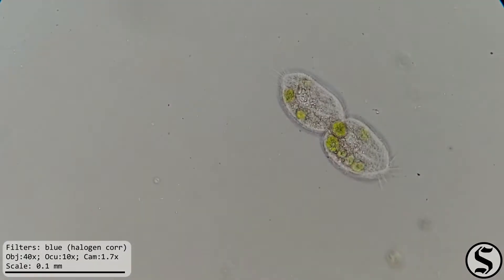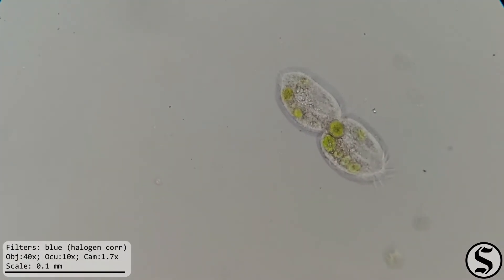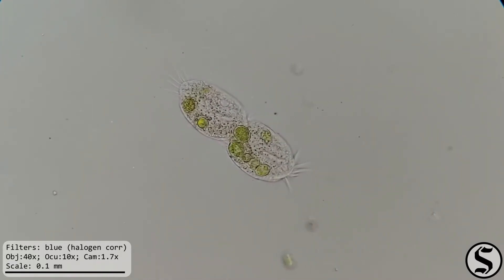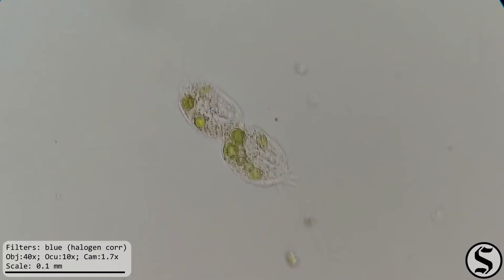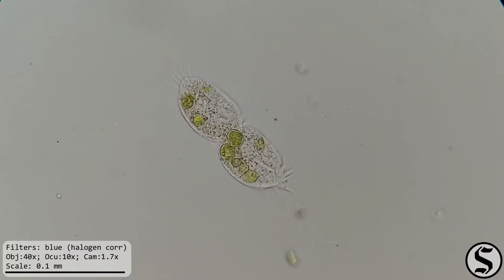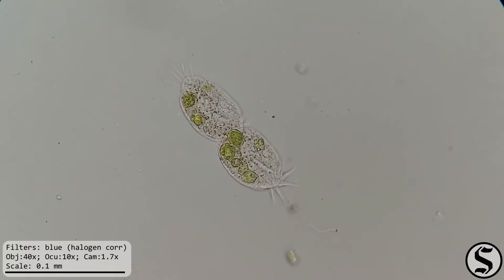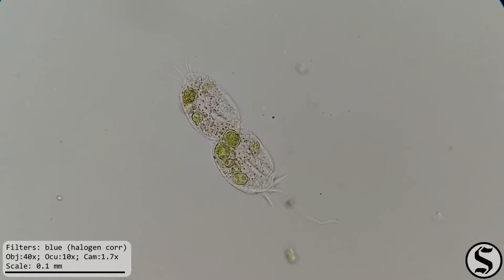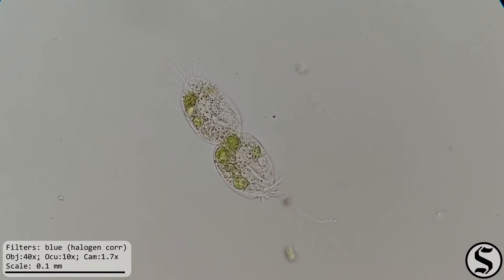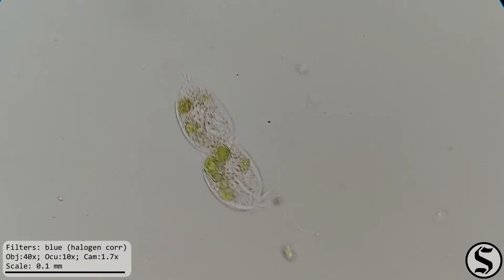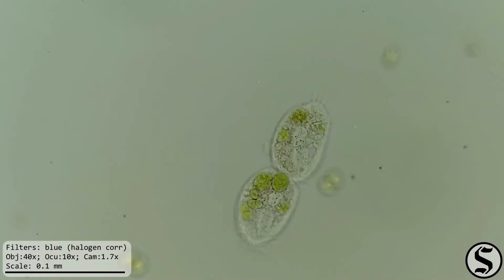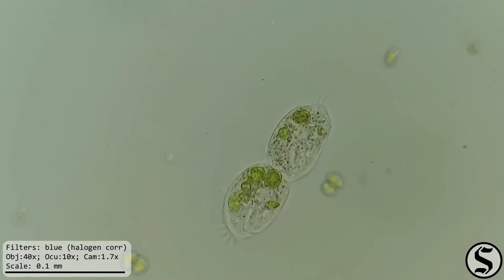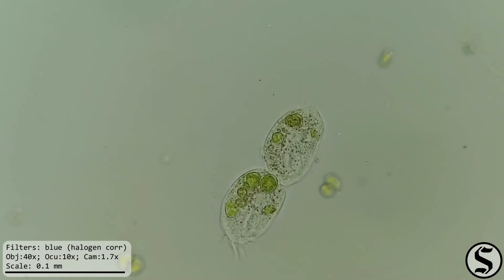And we can see at high magnification that it is in the process of dividing. You can see that it's really pinching together in the middle and that there are still things that are shared between the two cells. Looks like it was really munching on that green algae. That's probably why it's ready to divide, being well fed, favorable conditions. It's much warmer in my house than it is outside.